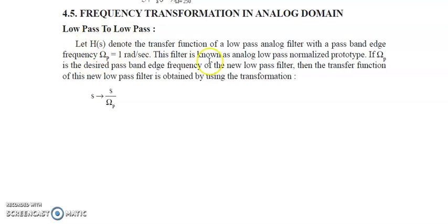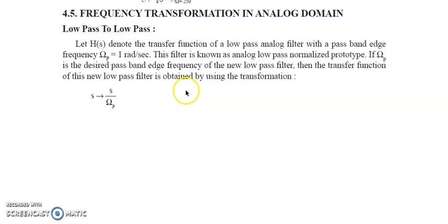If H(s) is the transfer function of a low pass filter, first we have to design a low pass normalized prototype, where Ωp should be equal to 1 radian per second. If Ωp is the desired passband edge frequency of the new low pass filter, then the transfer function of the new low pass filter is obtained by replacing s with s/Ωp. So first design the prototype with Ωp = 1 rad/s, then replace every s with s/Ωp, where Ωp is the new passband frequency.